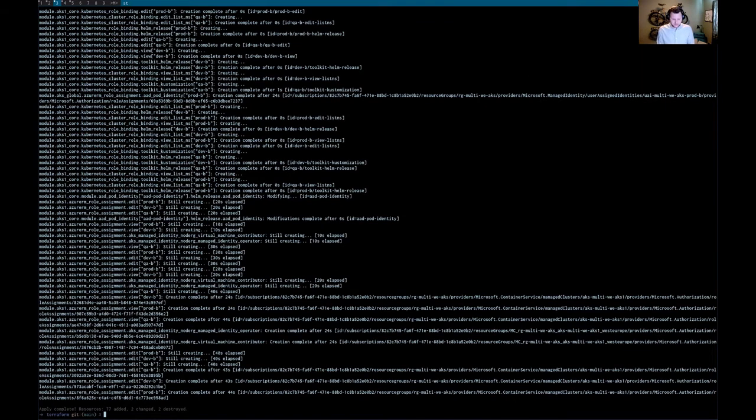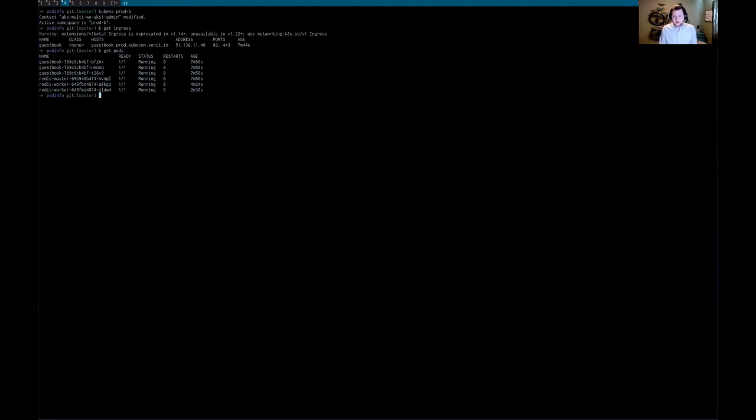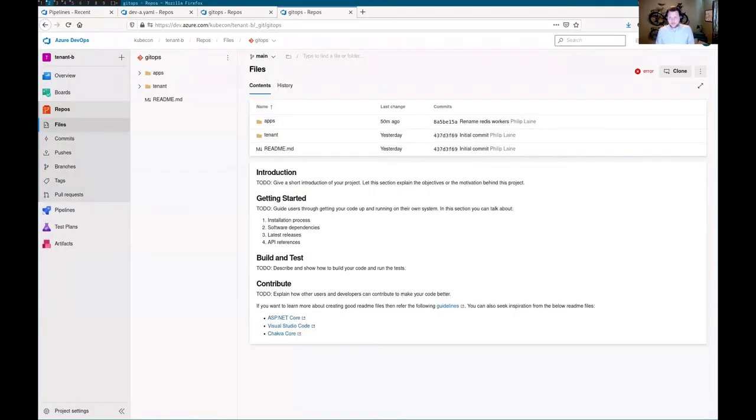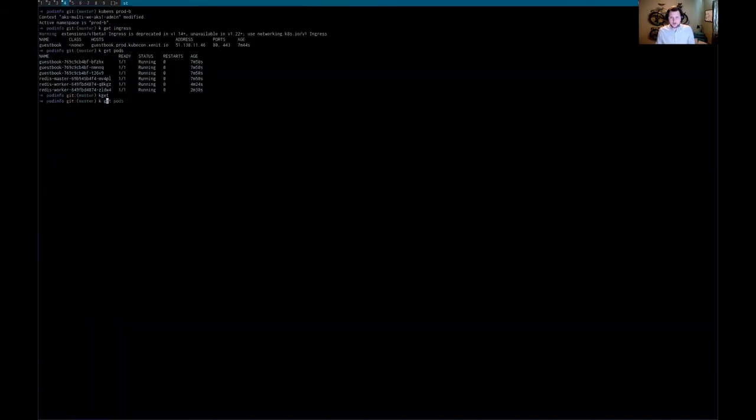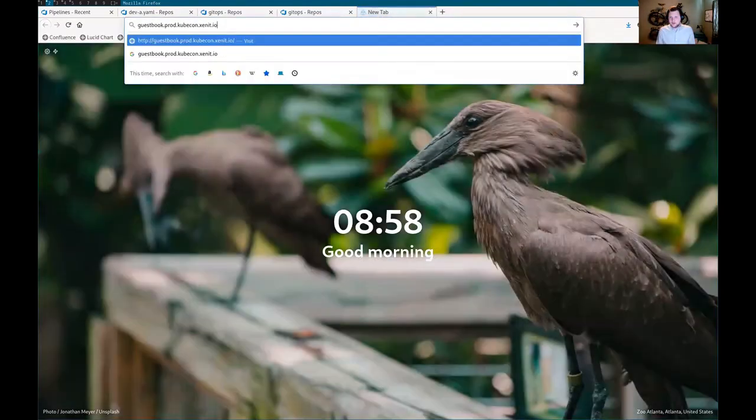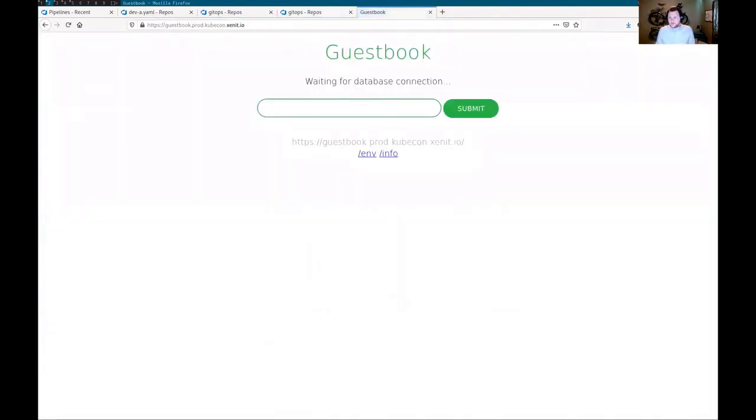Now the Terraform has completed, we can actually jump in and look what's been changed. Jump into production namespace for the B tenants and let's get the ingresses. You can see, oh great, an ingress has been applied to the cluster. We can get pods, and we can see that we have our guestbook application running with Redis. If we jump and get the DNS name, we're now seeing the guestbook application running here.